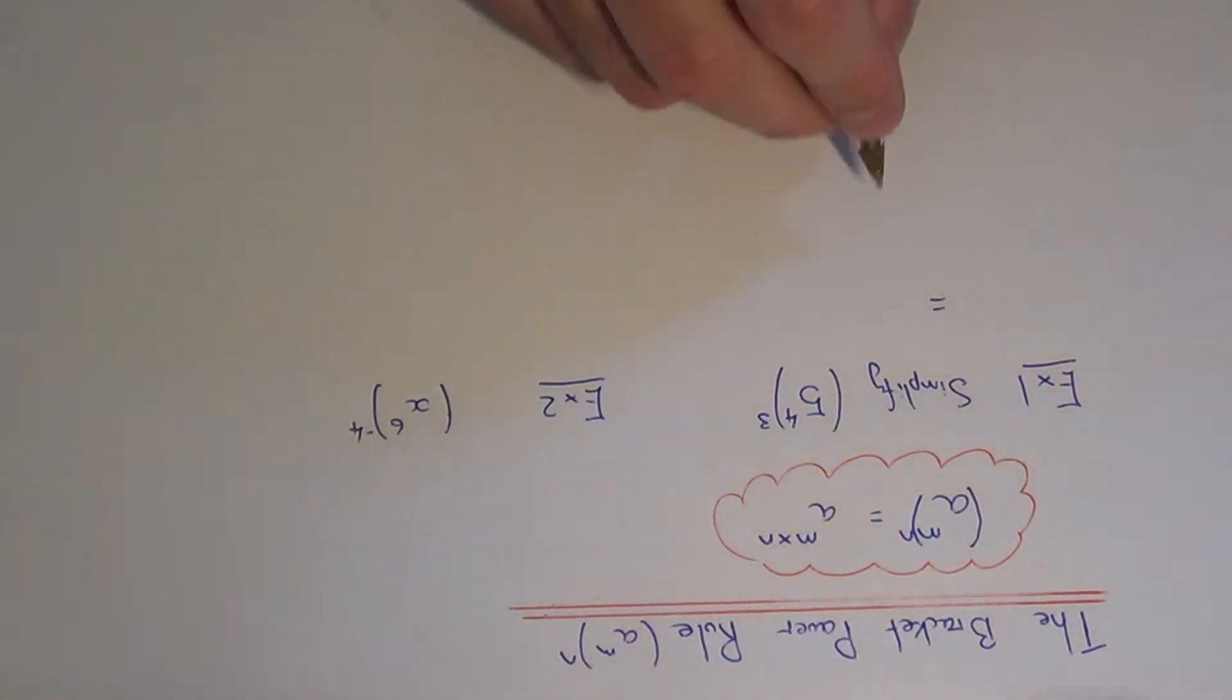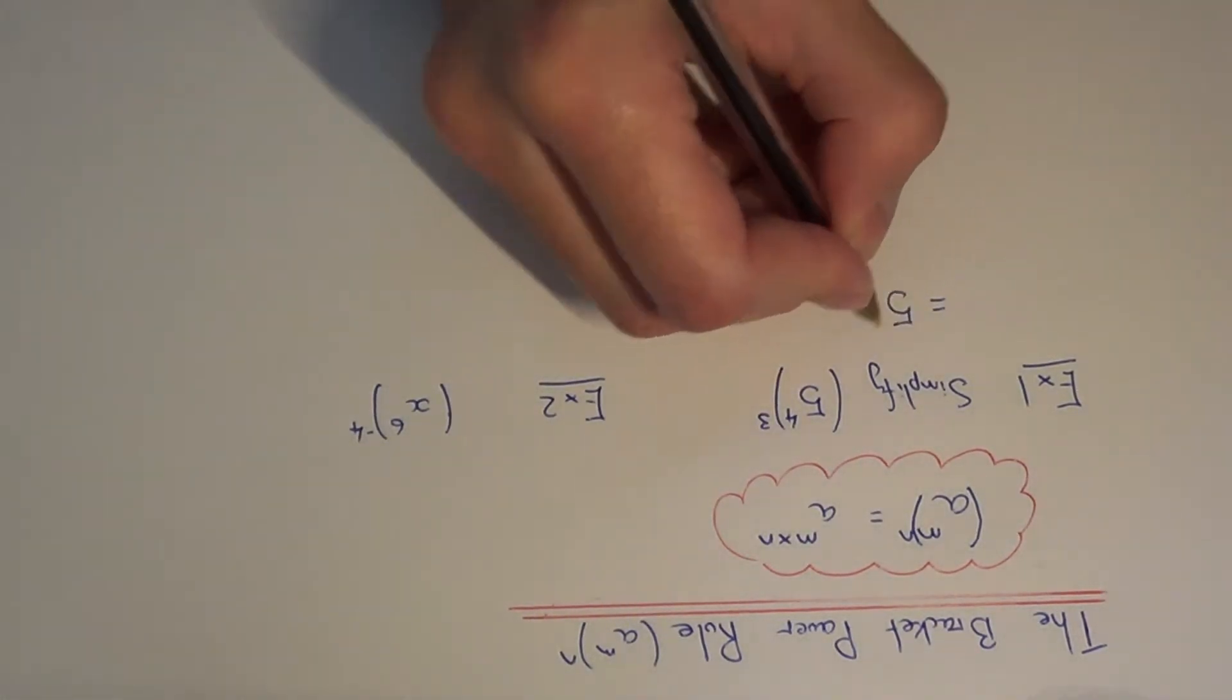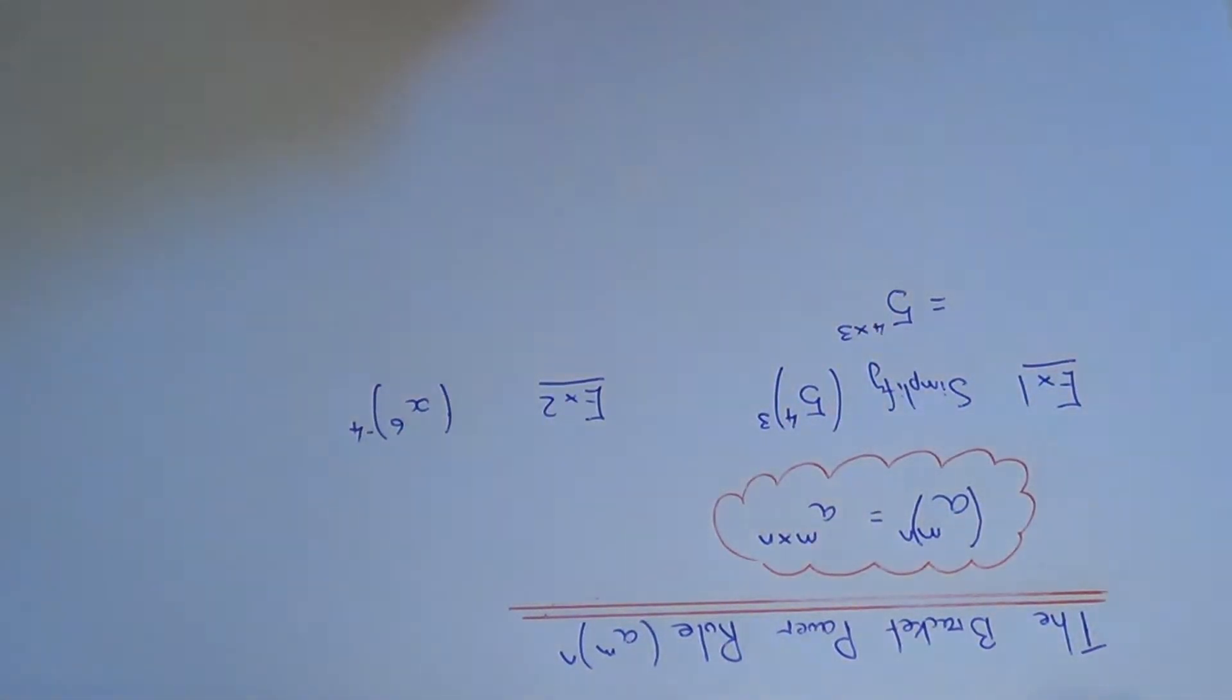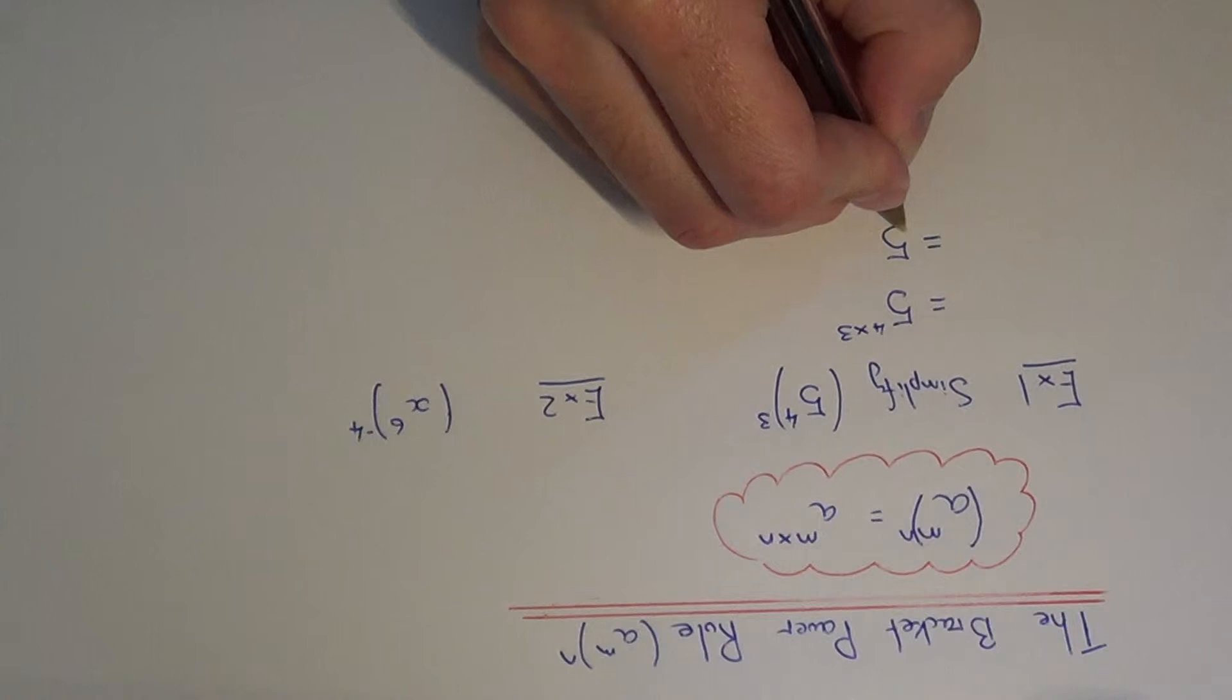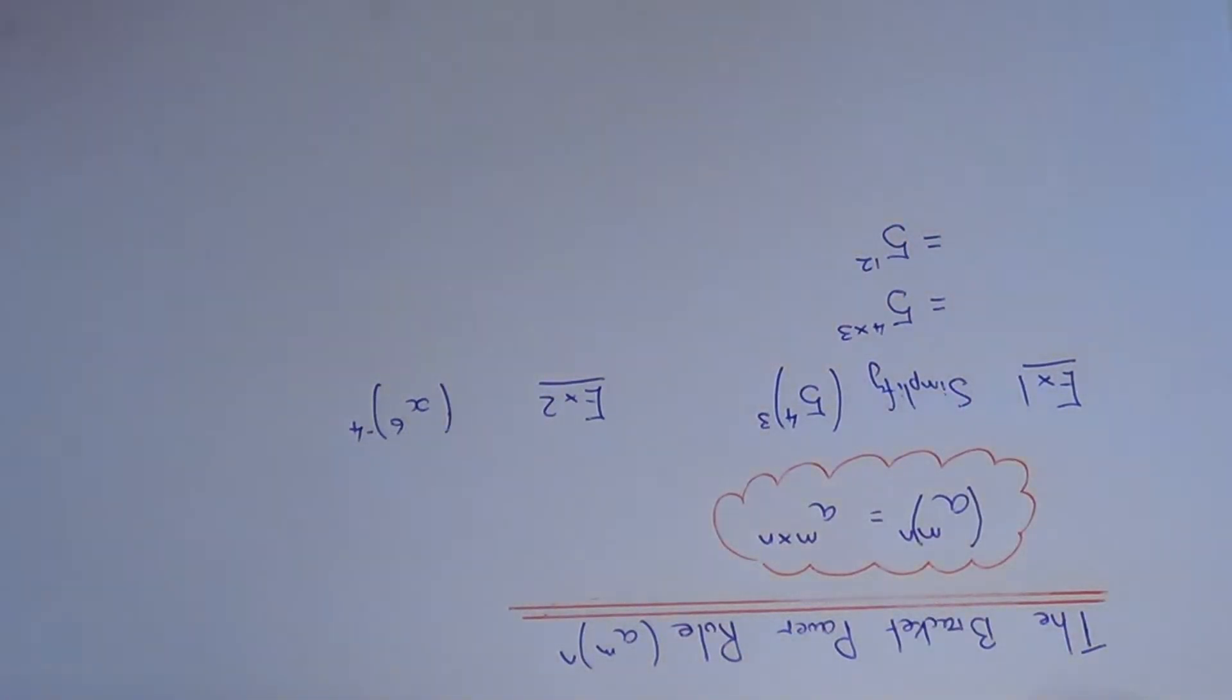We can get rid of the bracket by multiplying the two numbers at the top. We just need to work out four times three. Four times three is twelve. So our final answer will be five to the power of twelve.